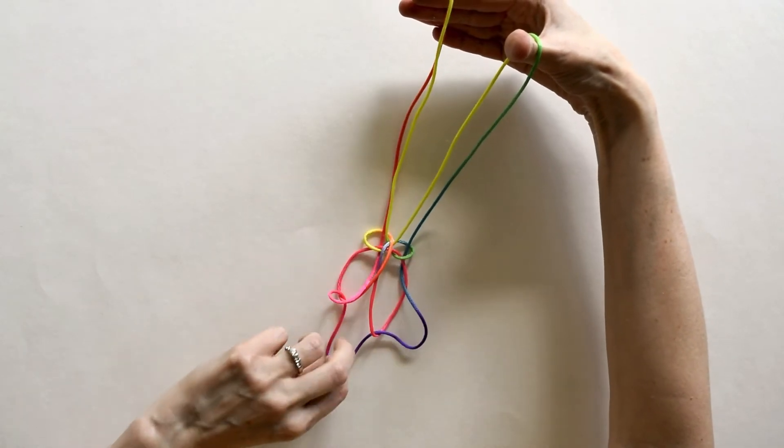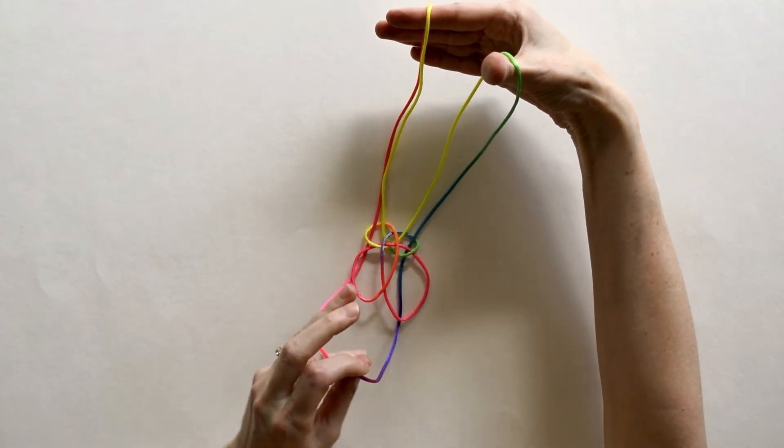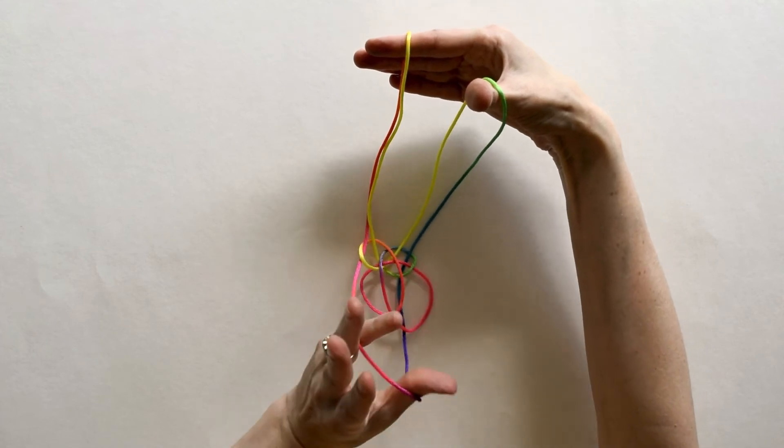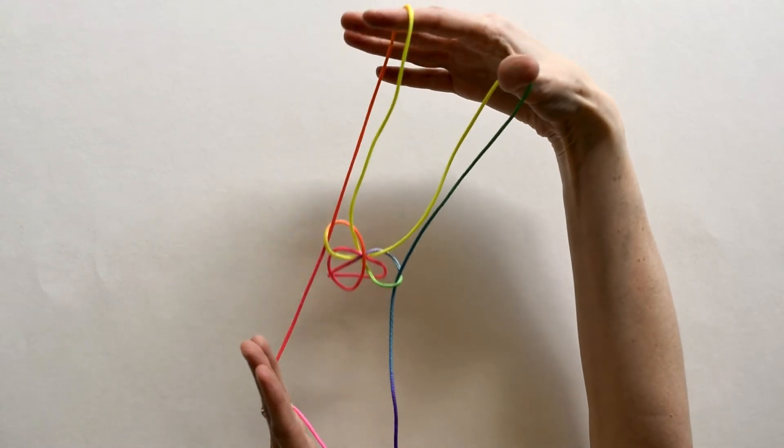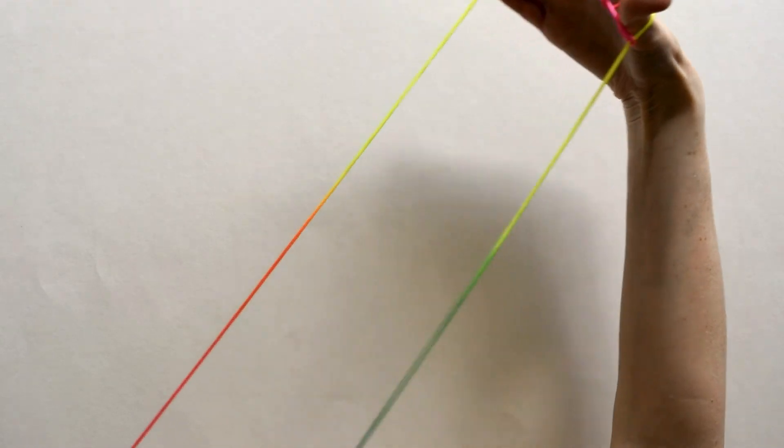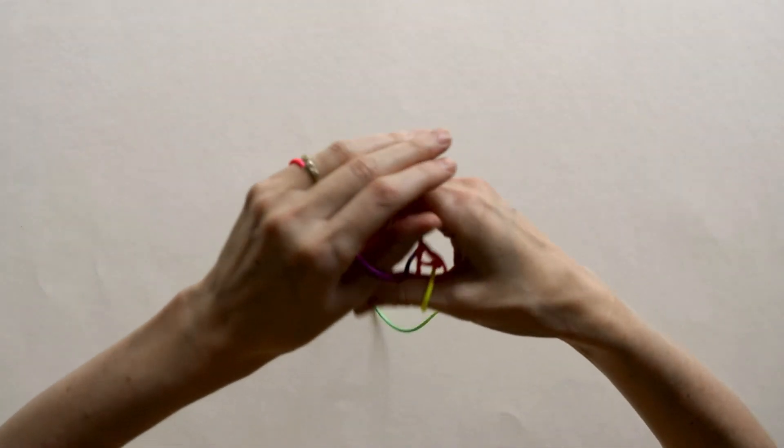And in between those two loops, you're going to pull down on the string to take it out of the bat wings. And there's your bat. And then just pull your hand up to make your bat fly away.